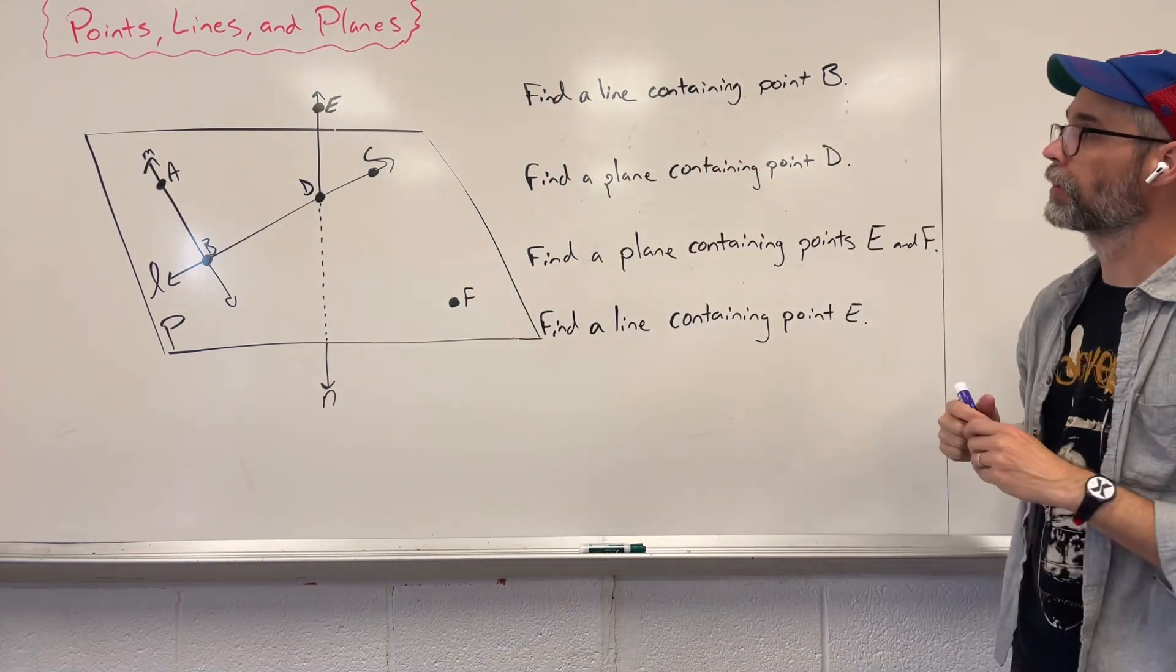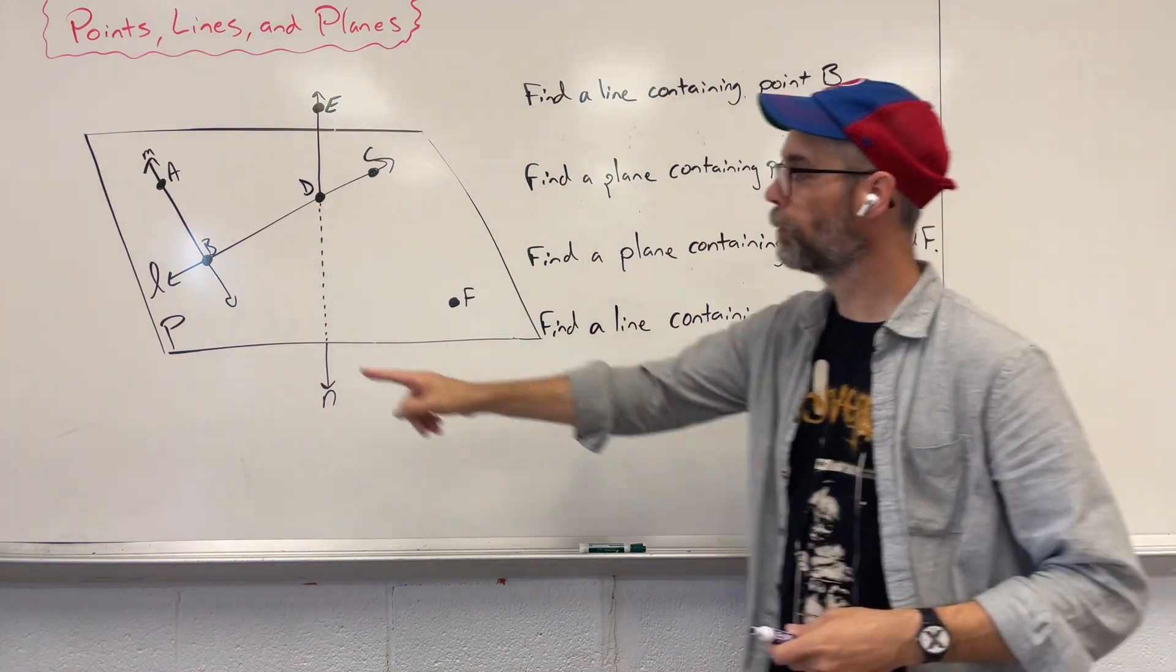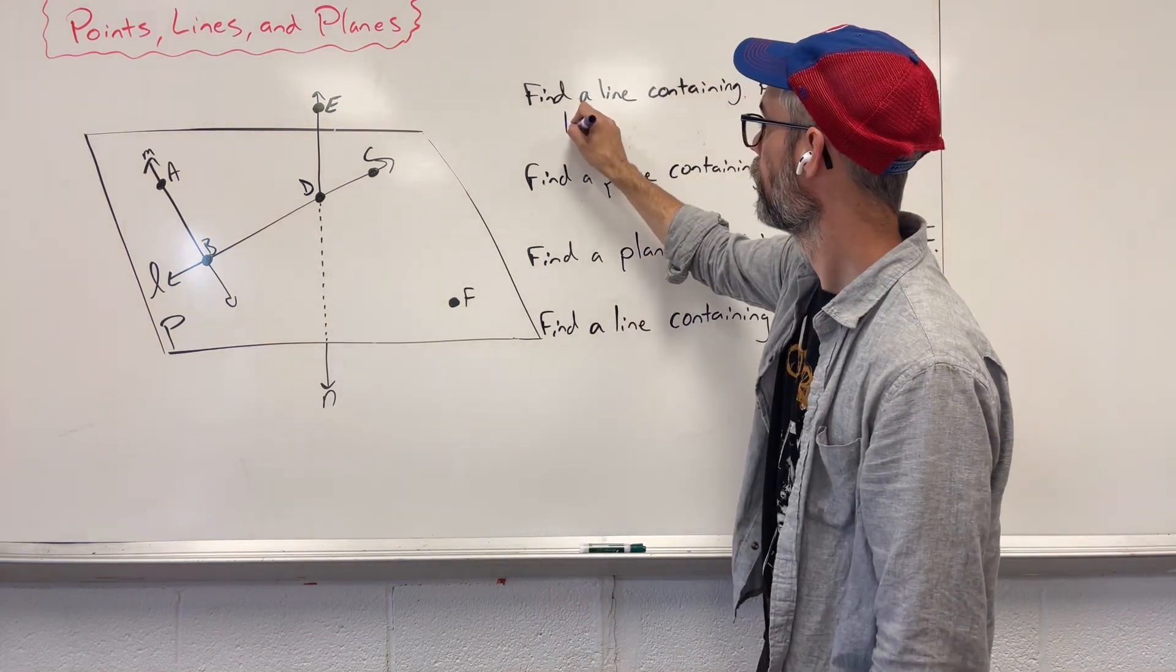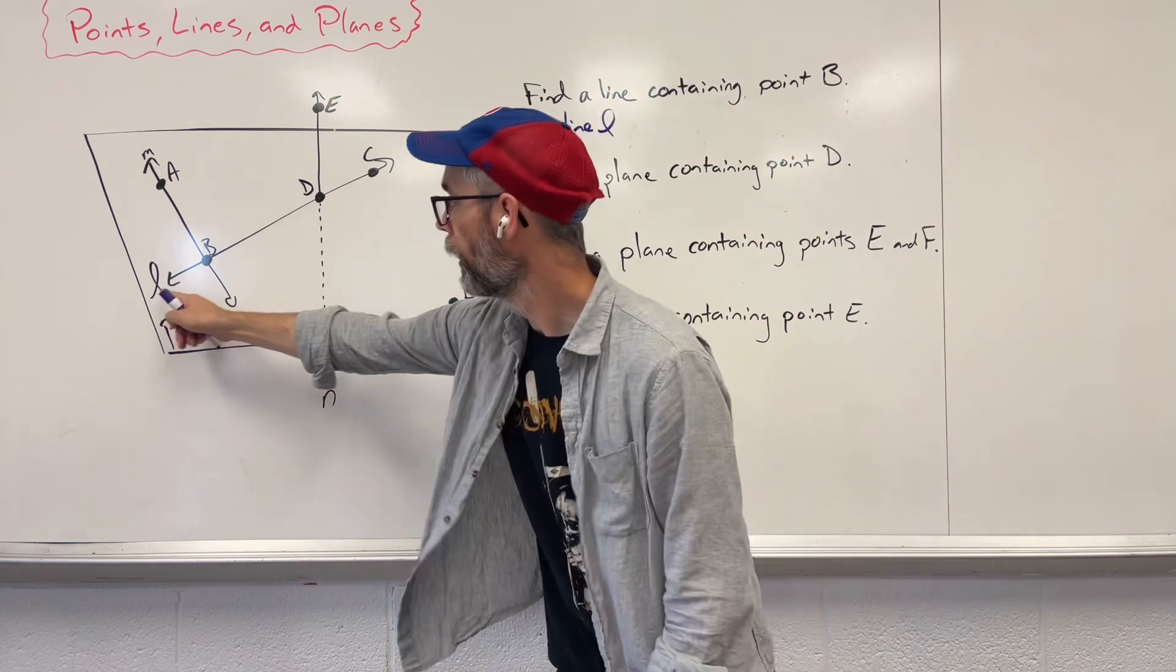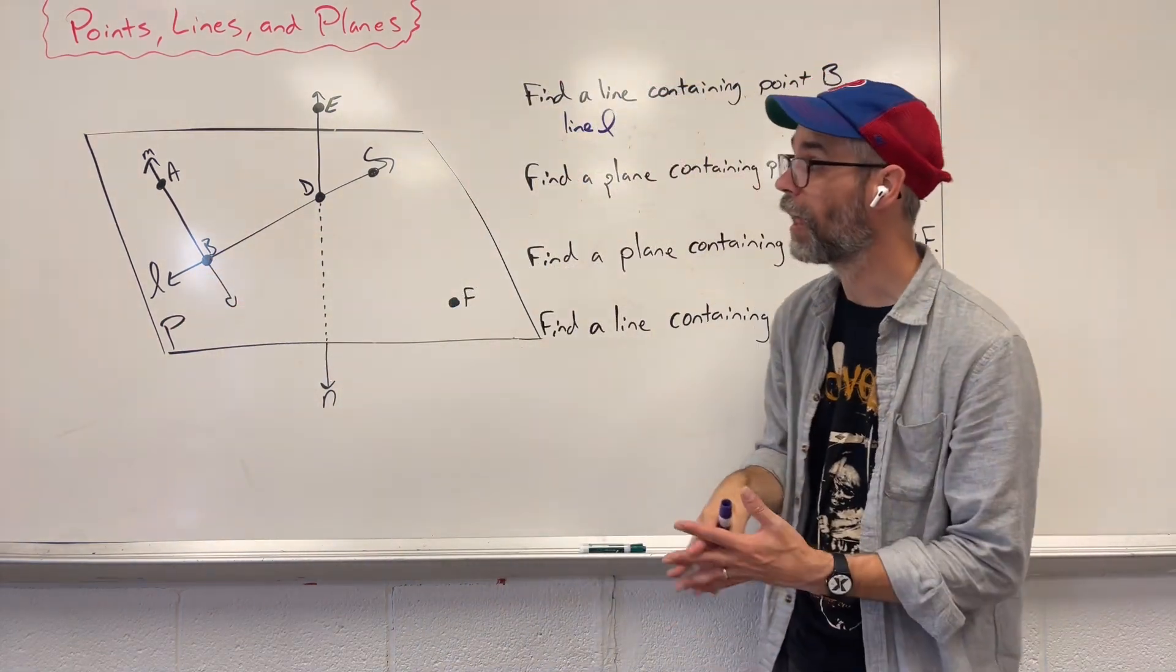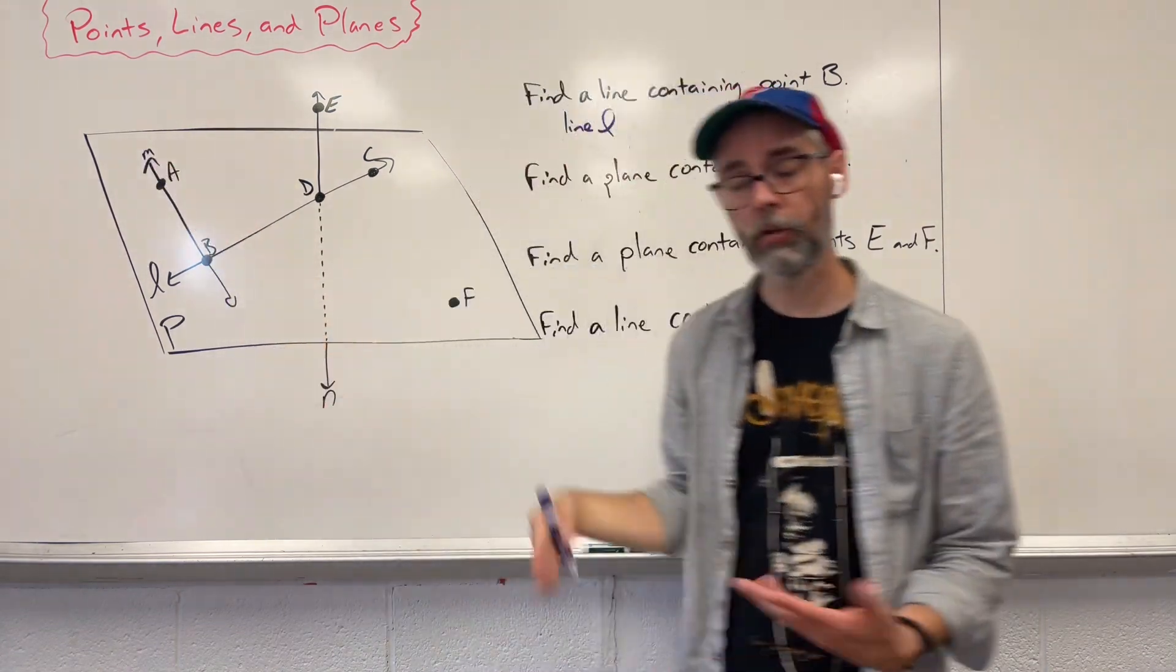Okay, let's find some stuff. Find a line containing point B. Point B is right here. Now there's multiple ways of writing this. You could say line L. Line L runs right here. It contains B. Great. You could also say line M, which is right there. That also has B.